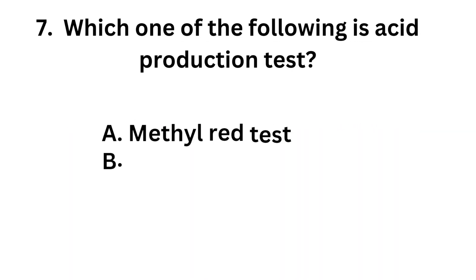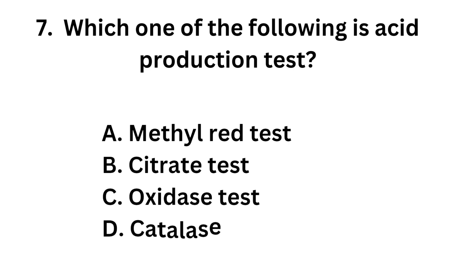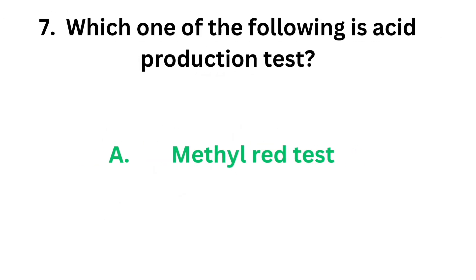Question number 7: Which one of the following is an Acid production test? Option A: Methyl red test. Option B: Citrate test. Option C: Oxidase test. Option D: Catalase test. The correct answer is Option A, Methyl red test.